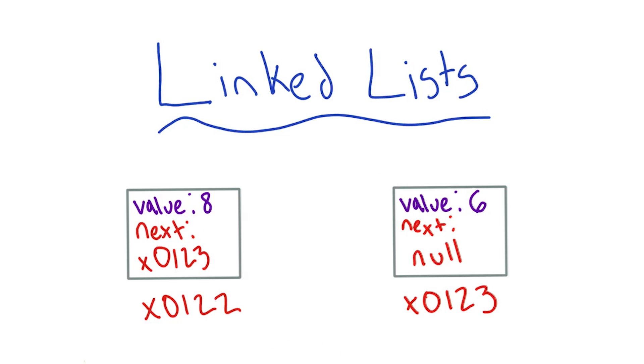Way down at the hardware level, your element actually has some space dedicated for it in memory. These are representing the memory locations. In this case, the next component is actually storing the memory address of the next element, while this element is storing null because it doesn't point to anything else.